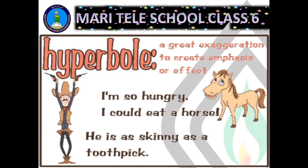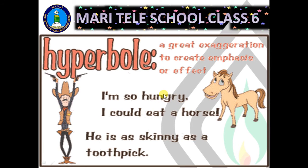Next is hyperbole. Hyperbole is a great exaggeration to create emphasis or effect. For example, 'I am so hungry I could eat a horse', or 'he is as skinny as a toothpick'. Can anyone actually eat a horse? No — but to show the extreme of hunger and create emphasis, the poet uses this phrase.